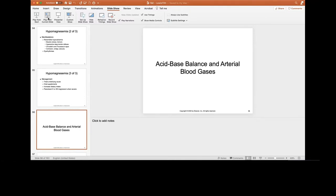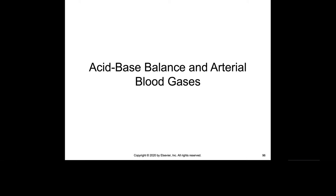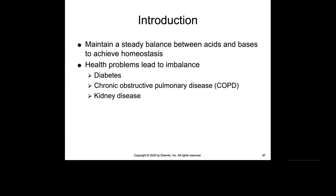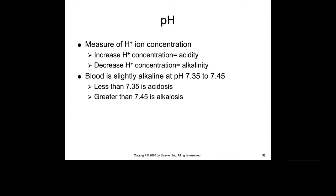We're going to talk about acid-base balance and arterial blood gases. Homeostasis requires that there be a balance between the acids and bases in your blood. When we are not achieving this, health problems such as diabetes, COPD, and kidney disease can cause this imbalance. You need to memorize your normal pH, which is 7.35 to 7.45. Less than 7.35 is acidosis; greater than 7.45 is alkalosis.